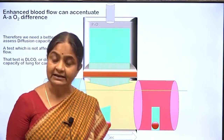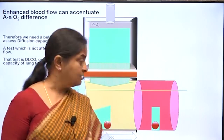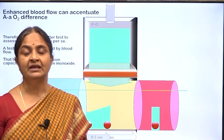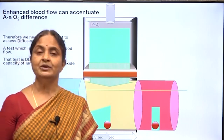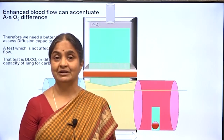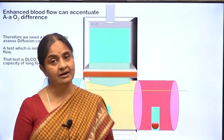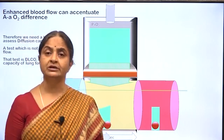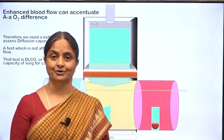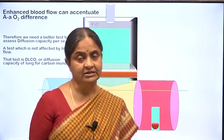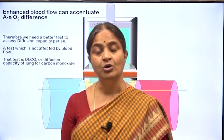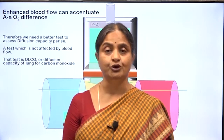Although the alveolar-arterial oxygen difference is the most practical test of diffusion impairment in the intensive care unit, it is not the best: moderate diffusion impairment may not affect it, and blood flow independently affects that value. A better test — sensitive even early on and not affected by velocity of blood flow or cardiac output — is the DLCO: diffusion capacity of the lung for carbon monoxide, done in pulmonary function testing laboratories.